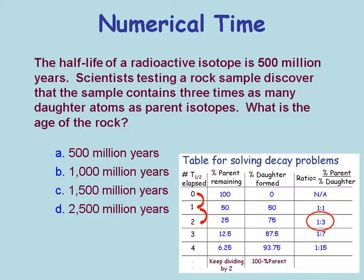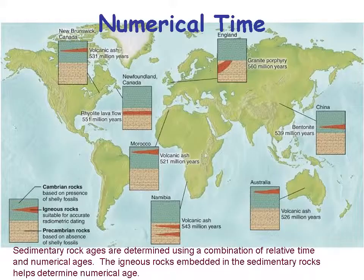Another question: the half-life of a radioactive isotope is 500 million years. Scientists testing a rock sample find three times as many daughter atoms as parent atoms. Using the decay table — a one-to-three ratio corresponds to two half-lives — so the age of the rock would be two times 500 million, or one billion years. The age of sedimentary rocks is determined using a combination of relative time and numerical ages.